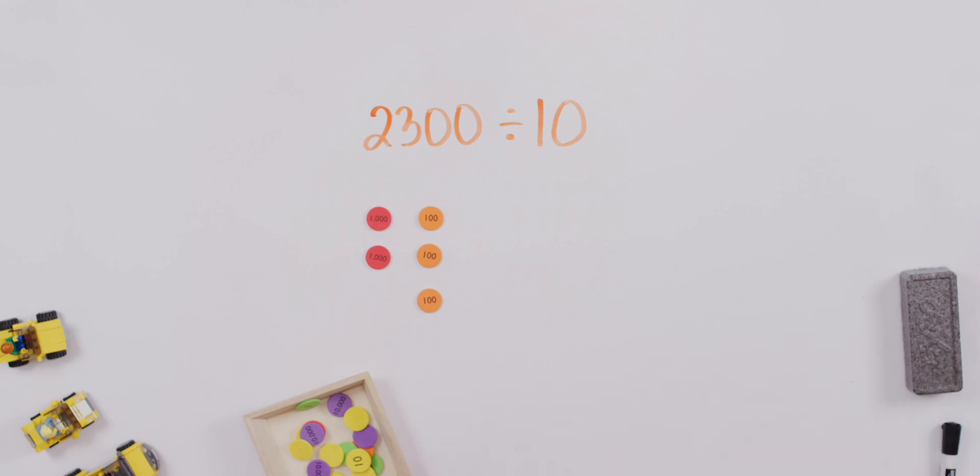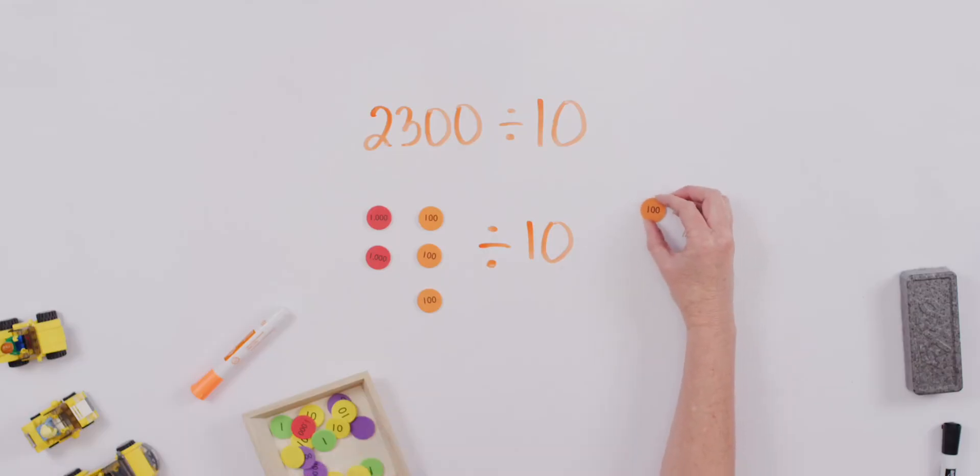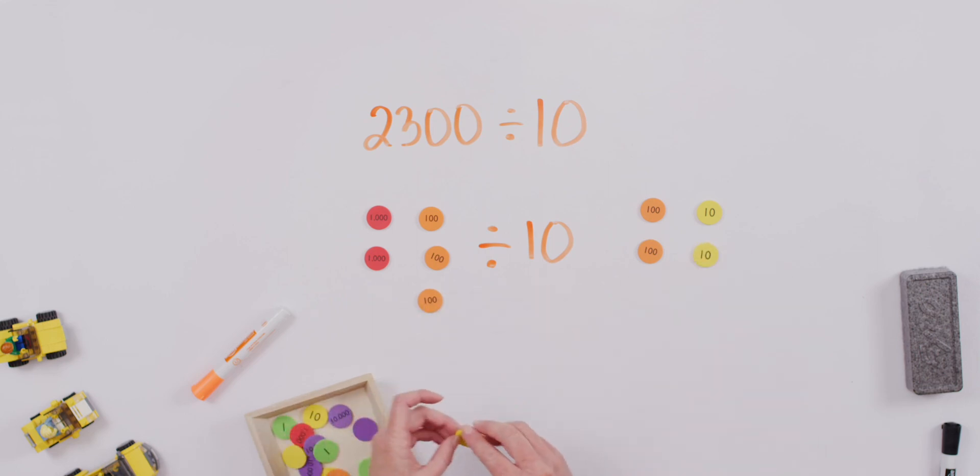Now we're dividing it by 10. Just like we did when we were multiplying, we are going to take each place value disk and divide it by 10. If I had 1,000 cookies and I divided it into 10 bags, how many would be in each bag? It would be 100. What if I had 100 and I'm dividing it by 10? It would be 10. And this 100 divided by 10 is going to give me 10, and our last one, 100 divided by 10 is going to give me 10.